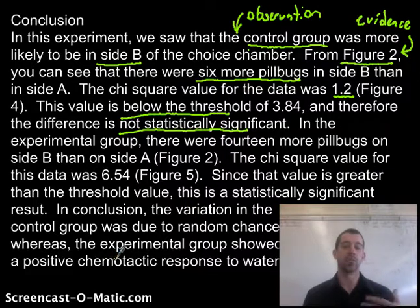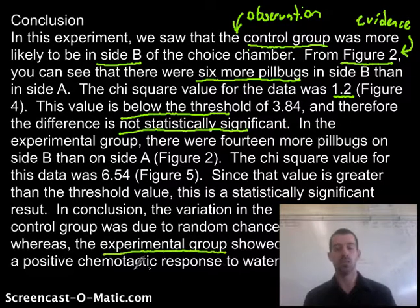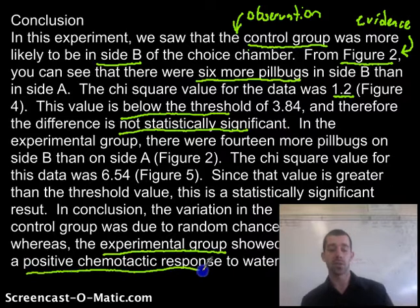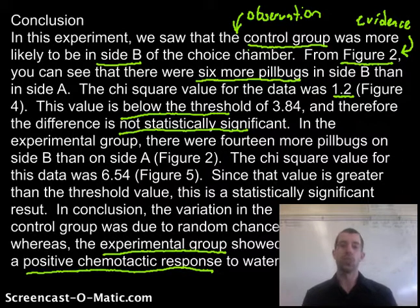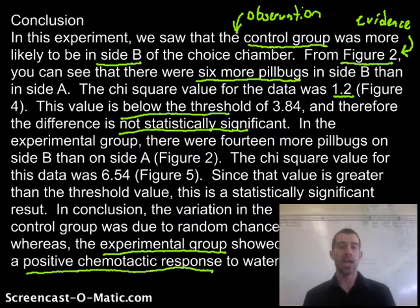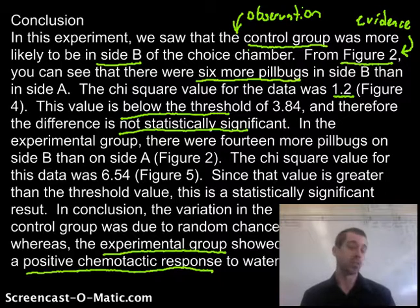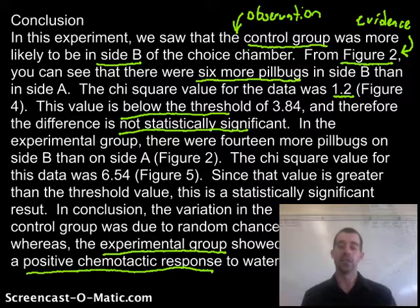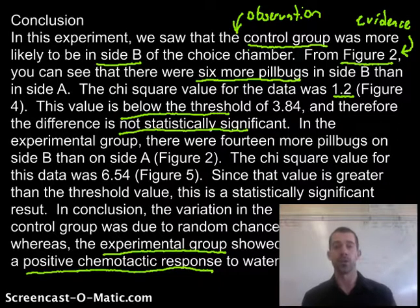Then I summed it all up by referencing the vocabulary words I used in my introduction — explaining that the experimental group did show a positive chemotactic response to water, that they wanted to move toward it, and I knew it wasn't just random chance because of my chi-squared values. Your conclusions will not always look exactly like this, but make sure they have both observations and evidence for everything you say. It's usually a good idea to explain what you learned from each of your different figures. And don't forget that at the very end, you have to say what the whole experiment meant — what did you learn about the organisms you were studying?